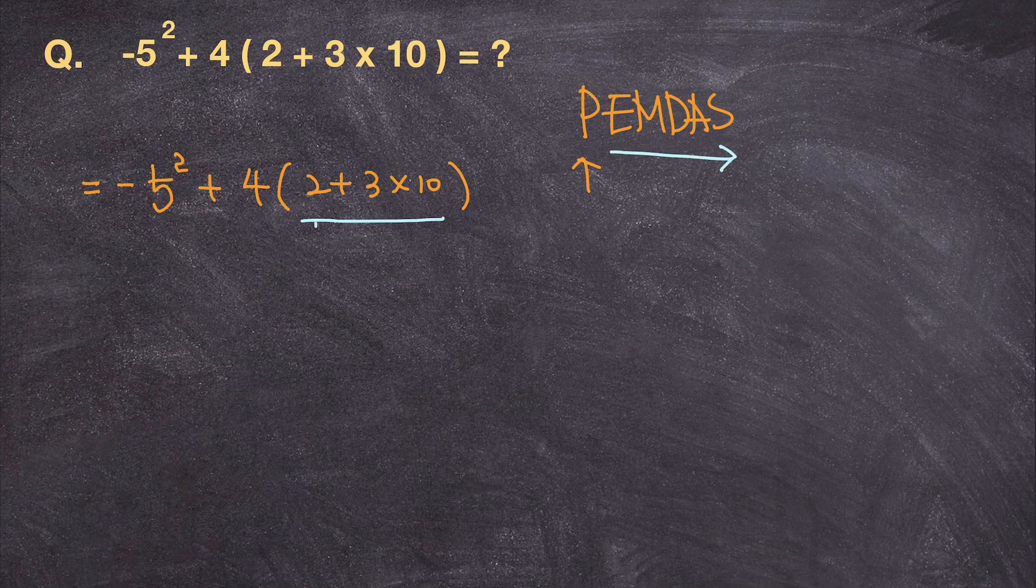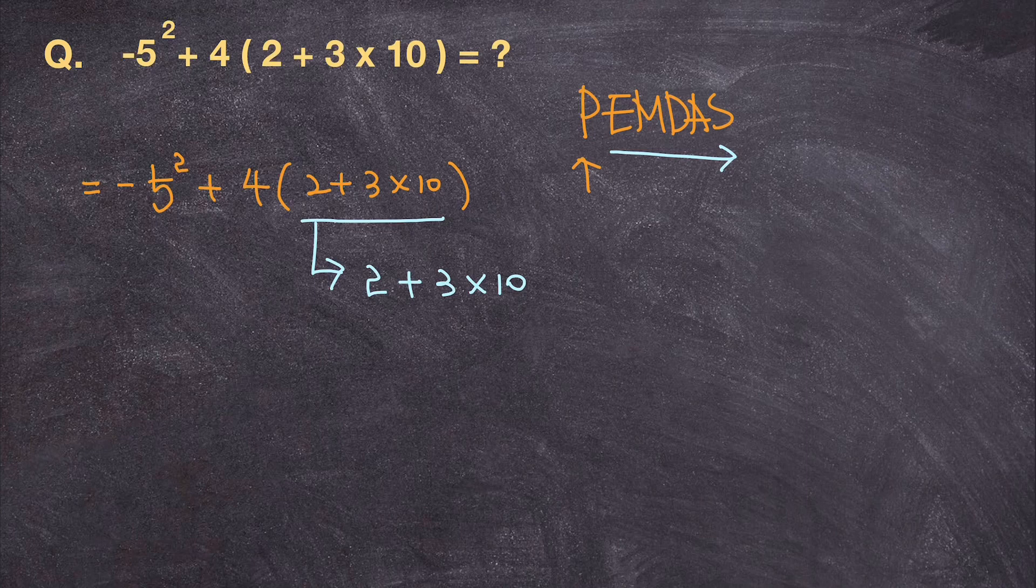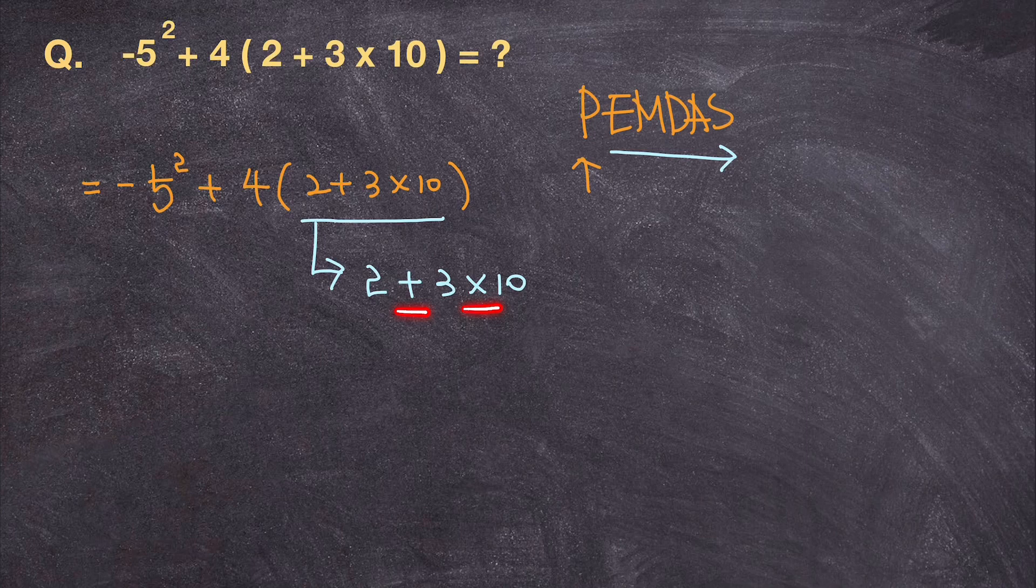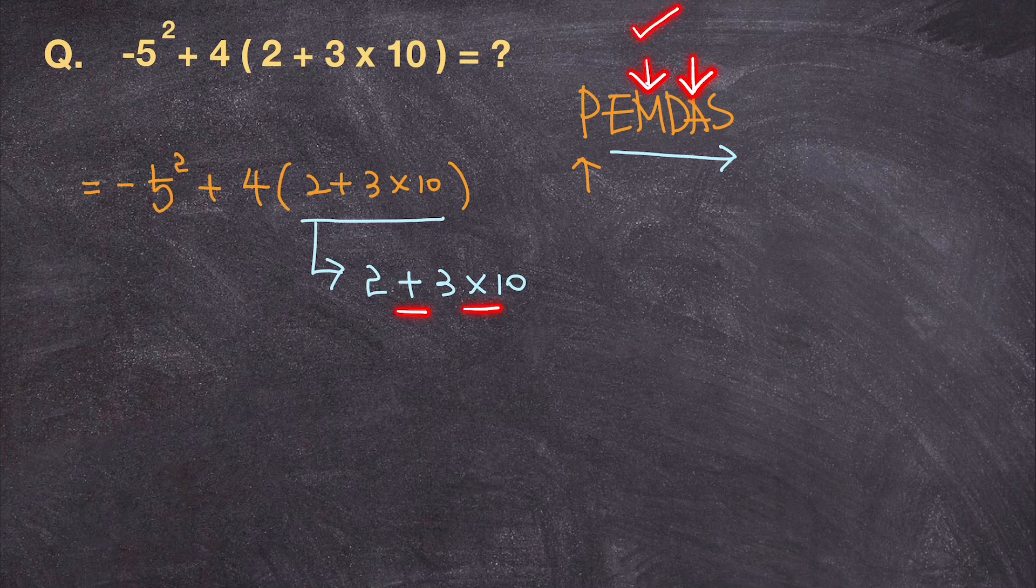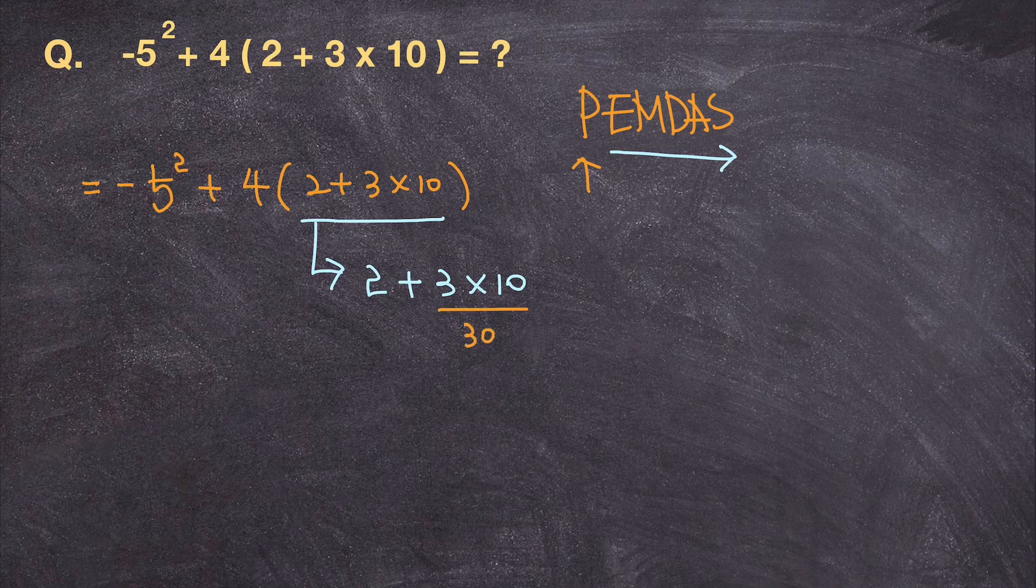So within the parenthesis, I have 2 plus 3 times 10. And according to the rule of PEMDAS, again, when you have addition and multiplication, multiplication takes precedence. Which means I need to take care of 3 times 10 first. So let's go ahead and do that. 3 times 10 gives me 30. So I have 2 plus 30, which will give me 32.